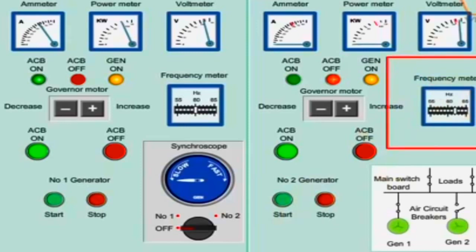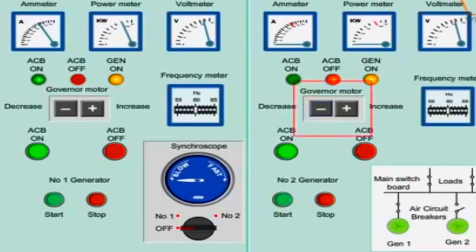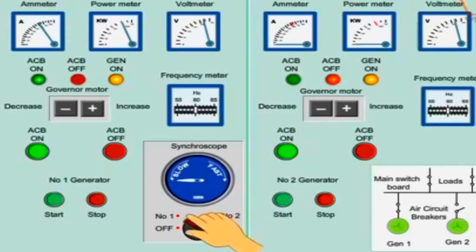Check the frequency of the generator. If the frequency is 62 Hertz, decrease the frequency of the number two generator. This is done by using the governor motor control switch in the panel, which decreases or increases the speed and hence the frequency of the generator. Switch on the synchroscope selector to number two generator.